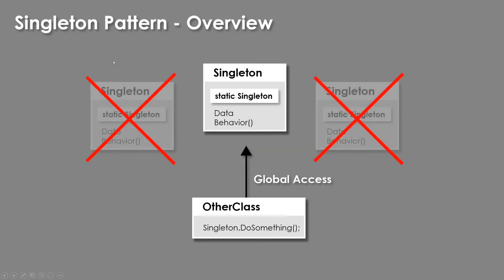The singleton pattern says two primary things. The first thing is that there should only be one object of this type in the level. So the singleton pattern enforces that there will only ever be one instance of this class. If you try to create new ones, it will look and see if a singleton already exists. If it does, it will destroy itself. If the singleton does not exist yet, then it will become that one instance, and any future ones won't create themselves.